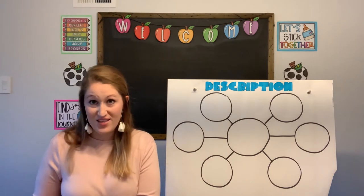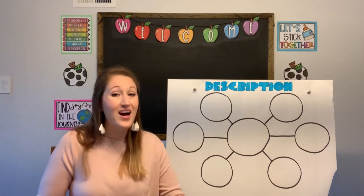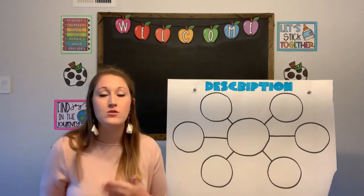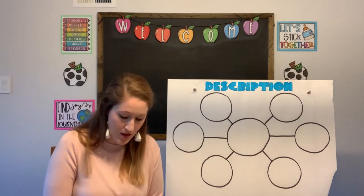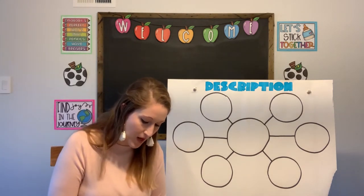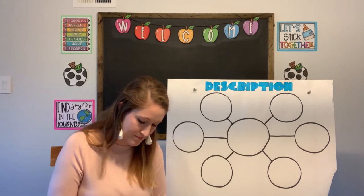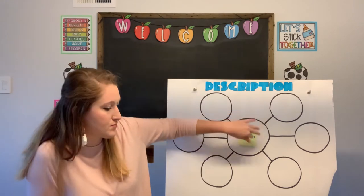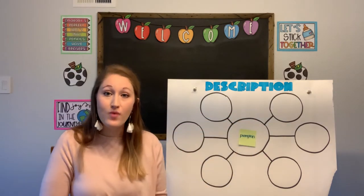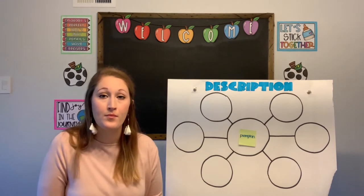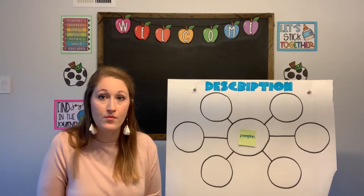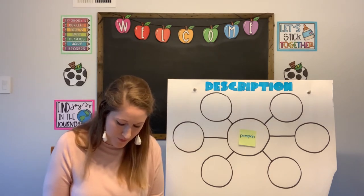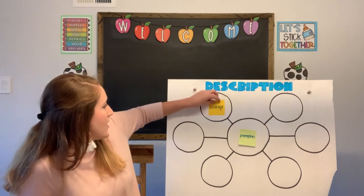Let's try this out — I'm going to need your help. Since Halloween is coming up, let's describe one thing we might see on Halloween: a pumpkin. Our topic, pumpkins, goes right in the center. What are some things you can say to describe a pumpkin? It's orange — we can describe its color. I'll add that to one of my surrounding circles.